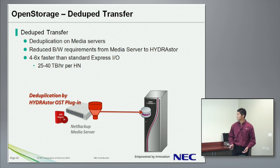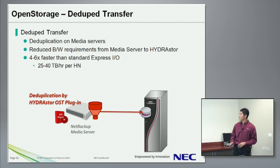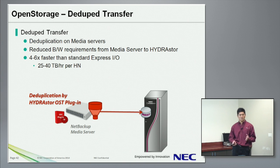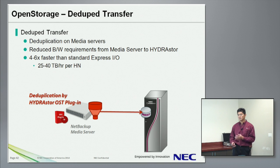With deduplication on the media server side, we can reduce the network bandwidth from media server to HyperStore. We released Express IO, and the dedup transfer actually works on top of Express IO. We achieved four to six times faster than standard Express IO.